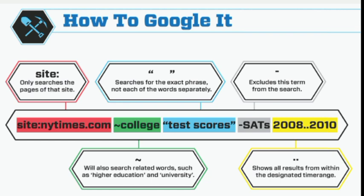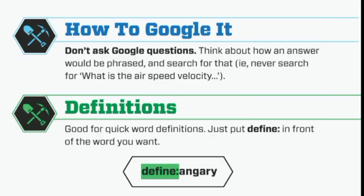That is how to search accurately. You should not ask Google questions — think about how whoever is writing that article is going to phrase it. Never search for things like 'What is the airspeed velocity?' Instead, search for 'the airspeed velocity of...' because that is how article writers title their content, and that is how you should think when writing articles you want to rank on SEO. You can also use 'define:' for definitions, 'calculate:' for calculations, and 'synonyms:' to find synonyms. That is how you Google effectively.